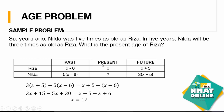We do not know the present age of Riza, so we designate that as X — that is our unknown and our base. Six years ago translates to X minus six, and in five years translates to X plus five. So if it's in the past, you subtract; if it's in the future, you add.